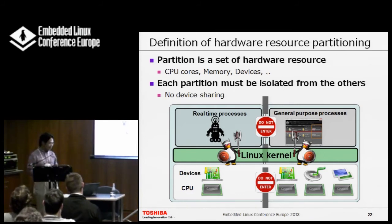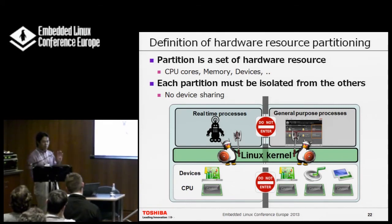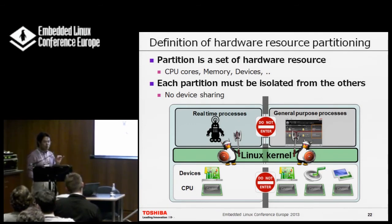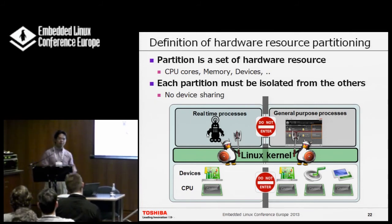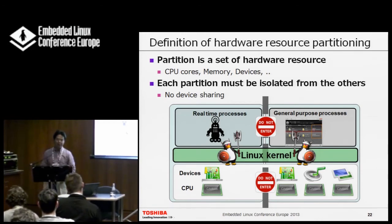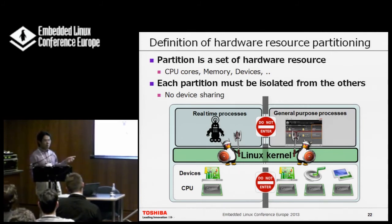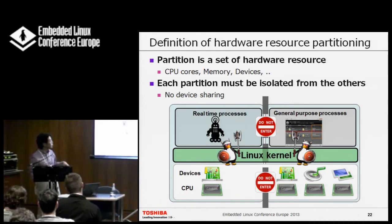I'd like to define what hardware resource partitioning is. A partition is a set of hardware resources — CPU core, device, memory, and so on. Each partition must be isolated from the others, meaning no device sharing. Real-time processes only use one device set, and other processes use another. This assumption is necessary, because otherwise it becomes really complicated.